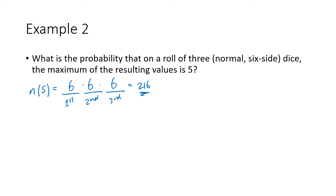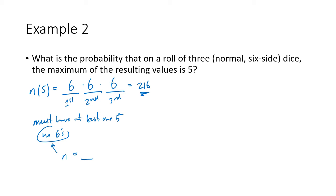What do we need for the maximum of the individual die rolls to be five? Two things must happen: we can't have any sixes, and we have to have at least one five. Let's count no sixes first. If we think of a first die, a second die, and a third die, the number of ways we can have no sixes is 5 × 5 × 5, because we only have five possibilities for each die, which gives us 125 possibilities where we don't roll any sixes.